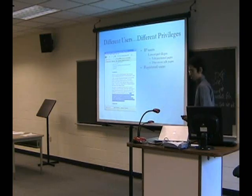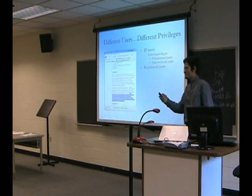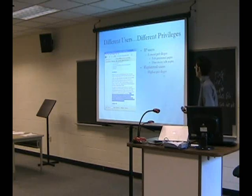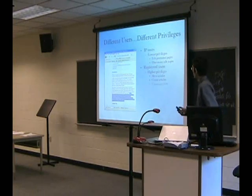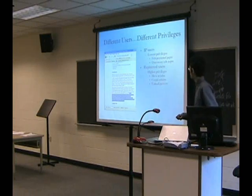Registered users — I'm a registered user in Wikipedia, and apparently I have several registered user accounts. These have higher privileges. They can move articles, which is practically renaming them. They can create articles, and they can upload pictures. You cannot upload pictures if you don't have a user account.